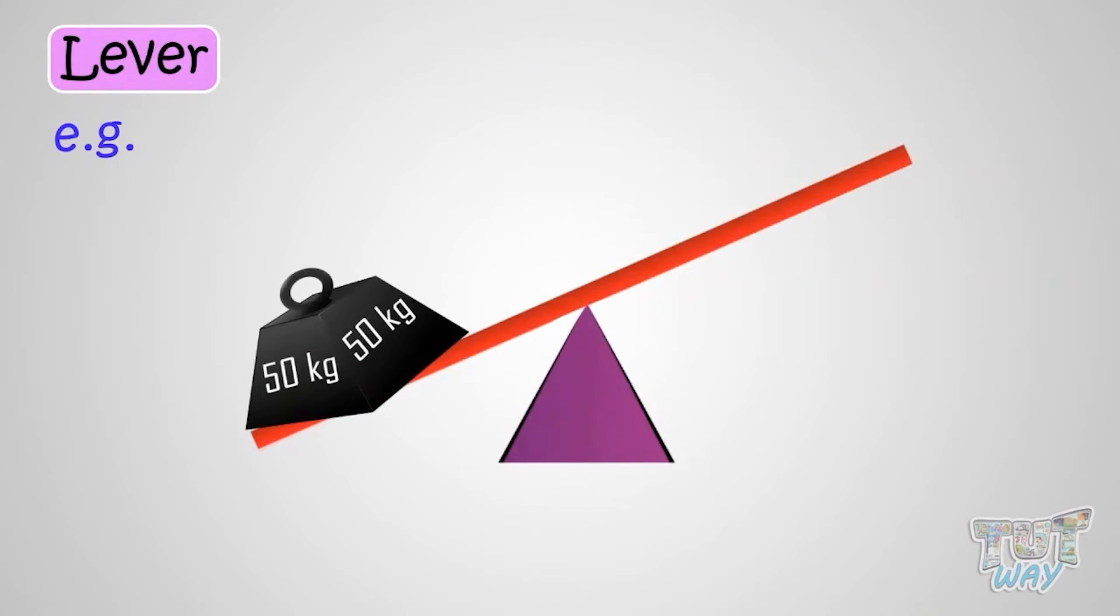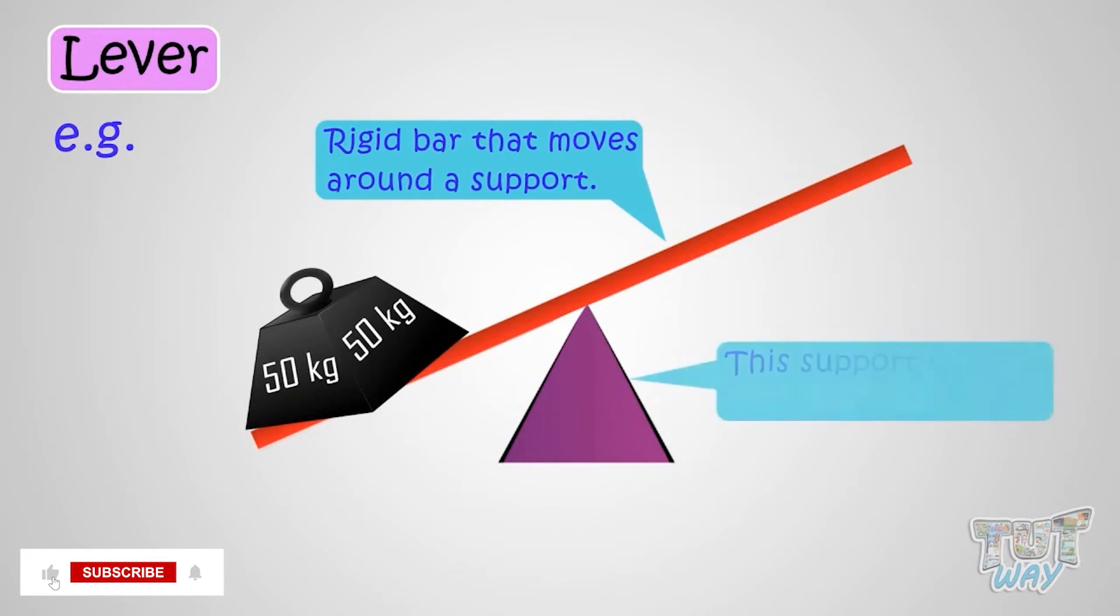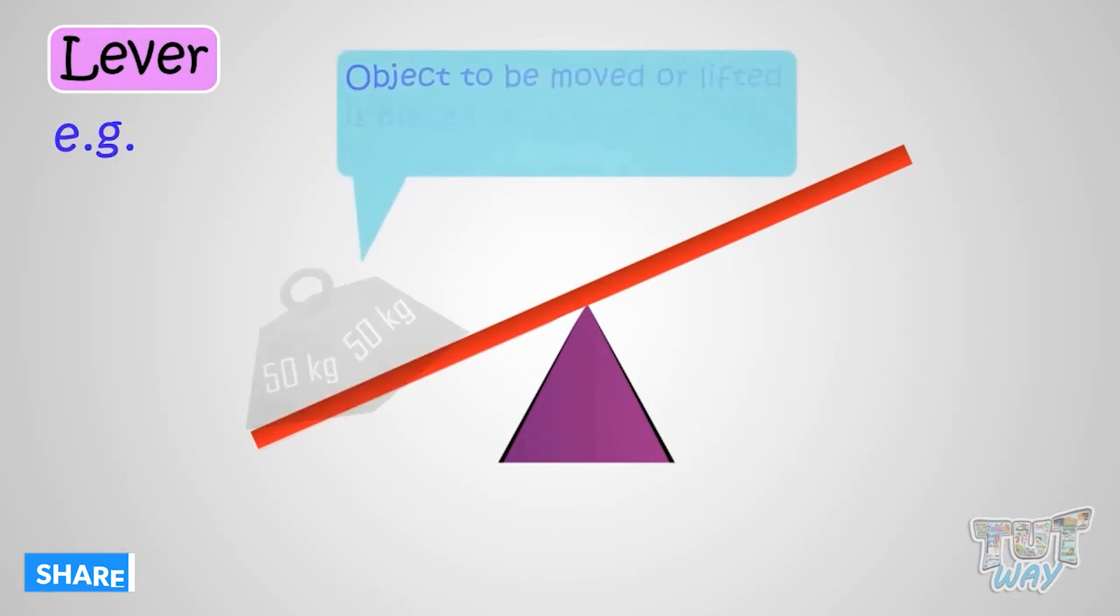Now let's see what is this lever. A lever is nothing but a rigid bar that moves around a support, and that support is known as fulcrum of the lever. Object to be moved or lifted up.